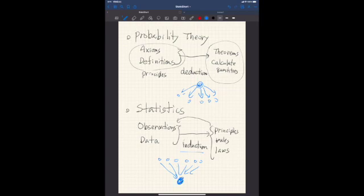So probability theory as a branch of mathematics is quite different from statistics. In fact, statistics is more or less like other fields of science, like physics or chemistry, biology, geology, or whatever. So the goals are different.